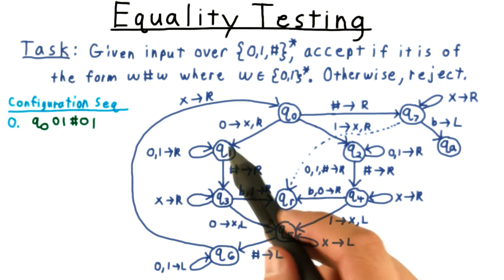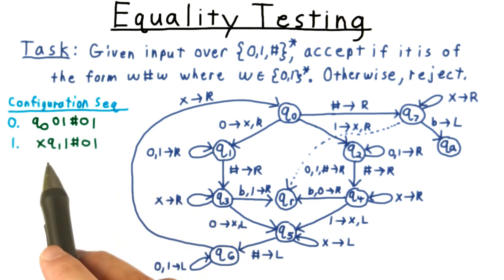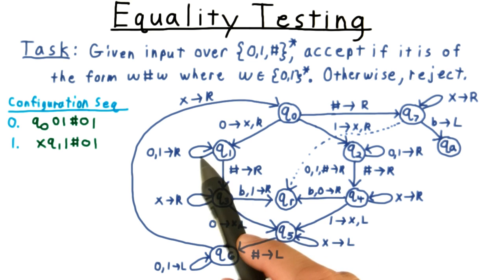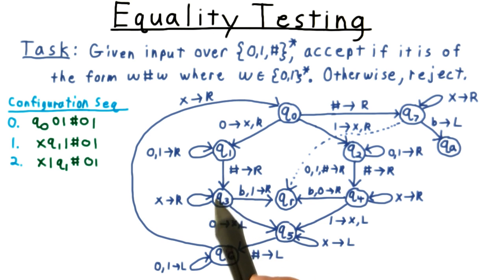So we transition to the state q1, xing out that 0. So this becomes our new configuration. Next, we read a 1, so we stay in this state and just move the head to the right. Next, we encounter the hash, so we move to state q3, and move the head to the right.